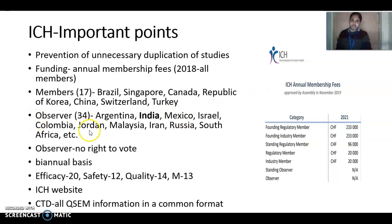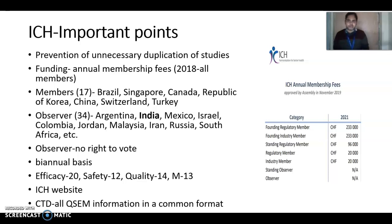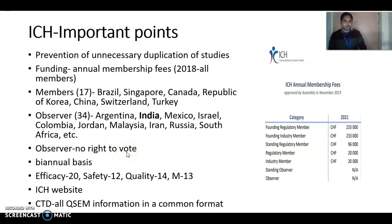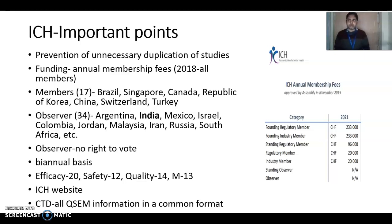Other observer countries include Mexico, Israel, Colombia, Jordan, Malaysia, Iran, Russia, and South Africa — totaling 34 observer countries and 17 members. Observers have no right to vote; they can only attend meetings in an observing capacity. However, observers can nominate expert members. Because of this limited role, observers do not pay any fees.